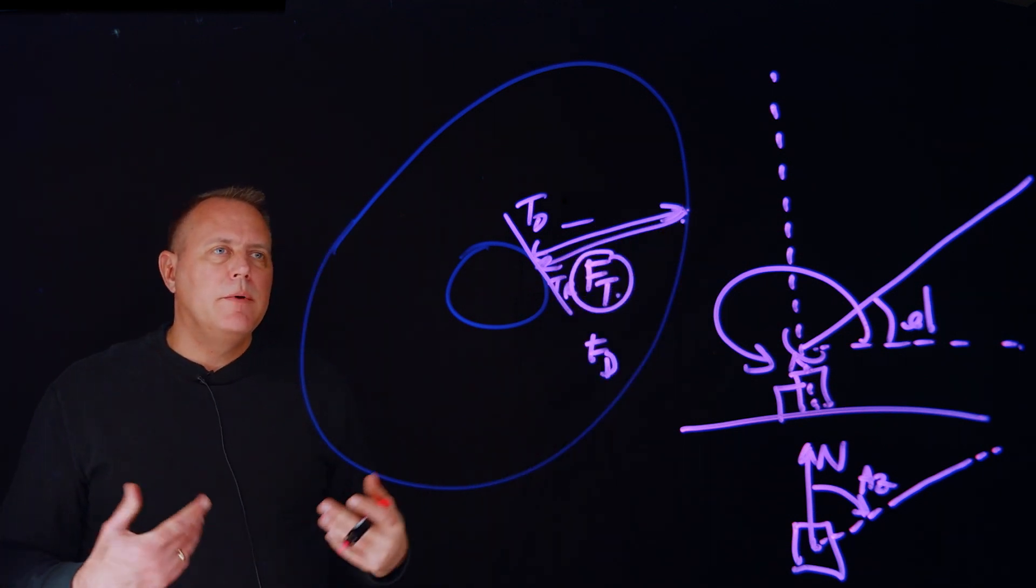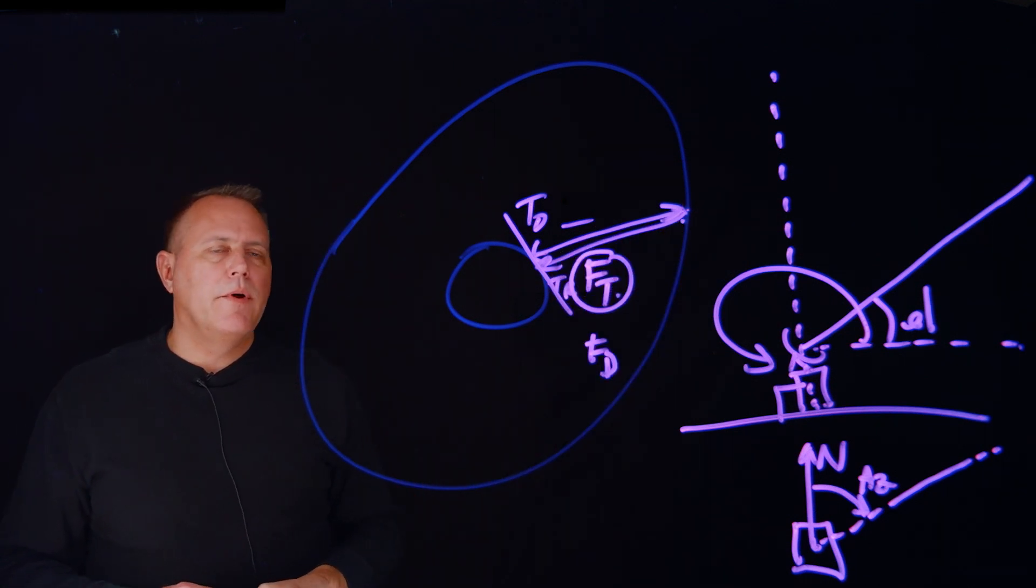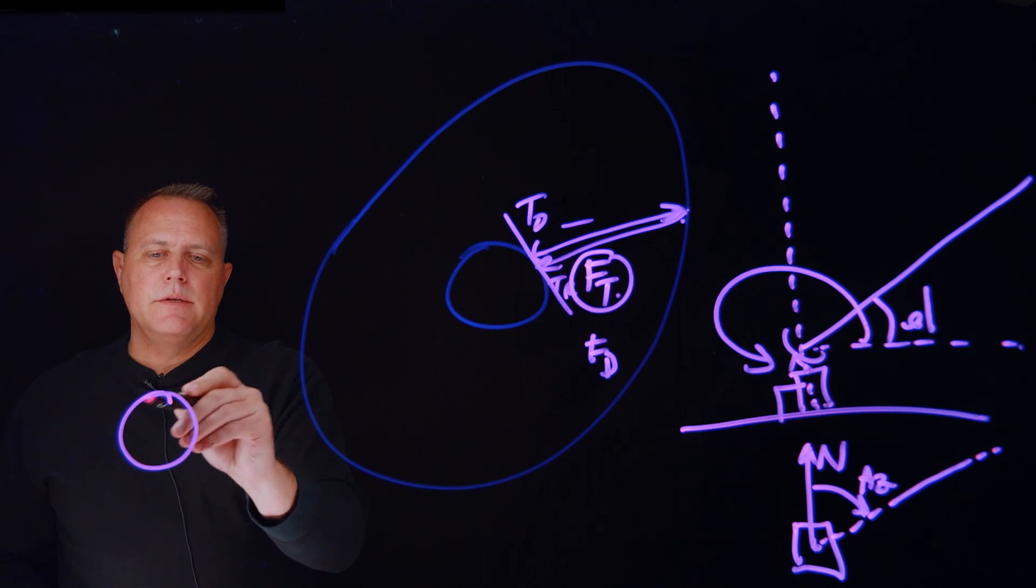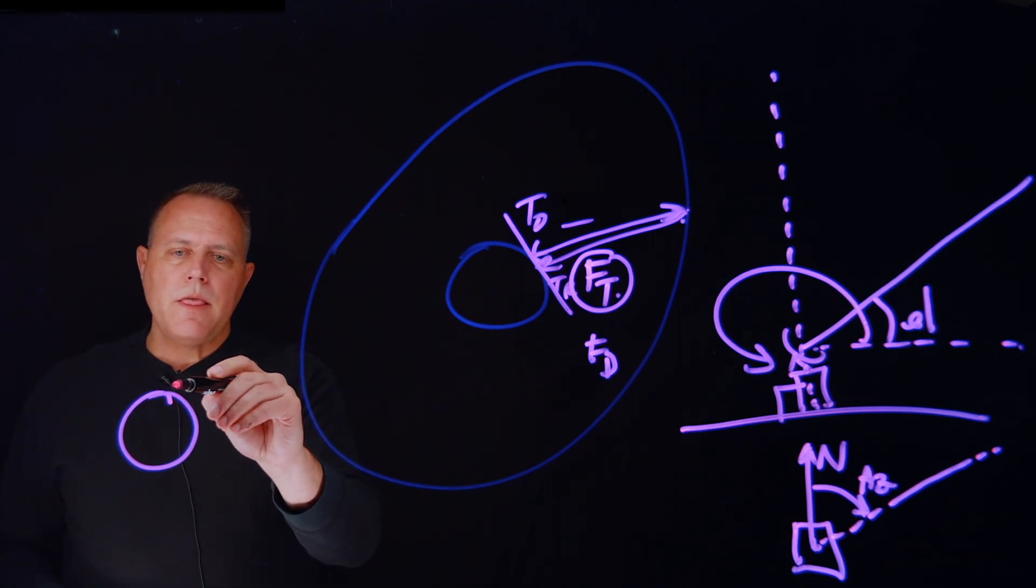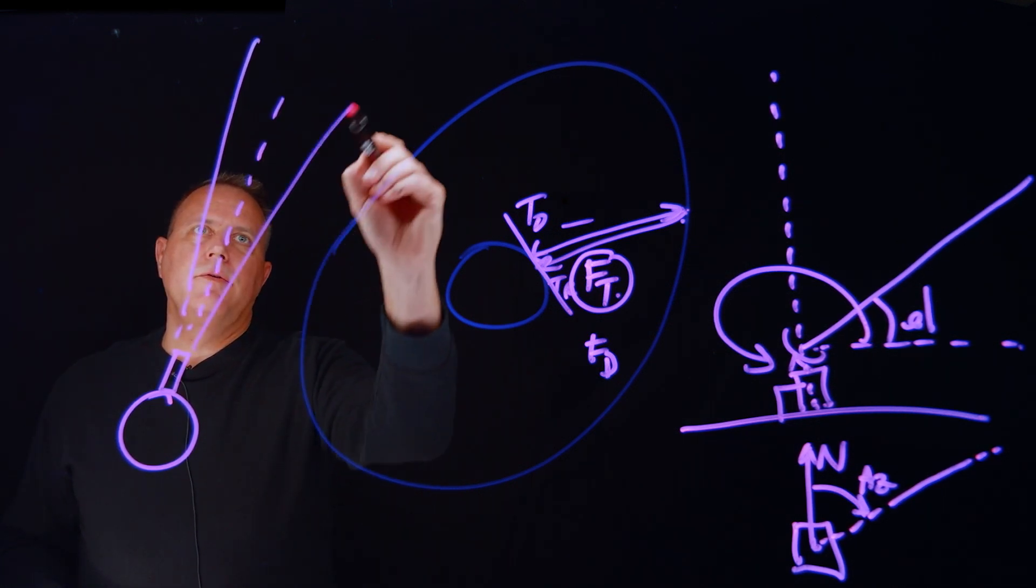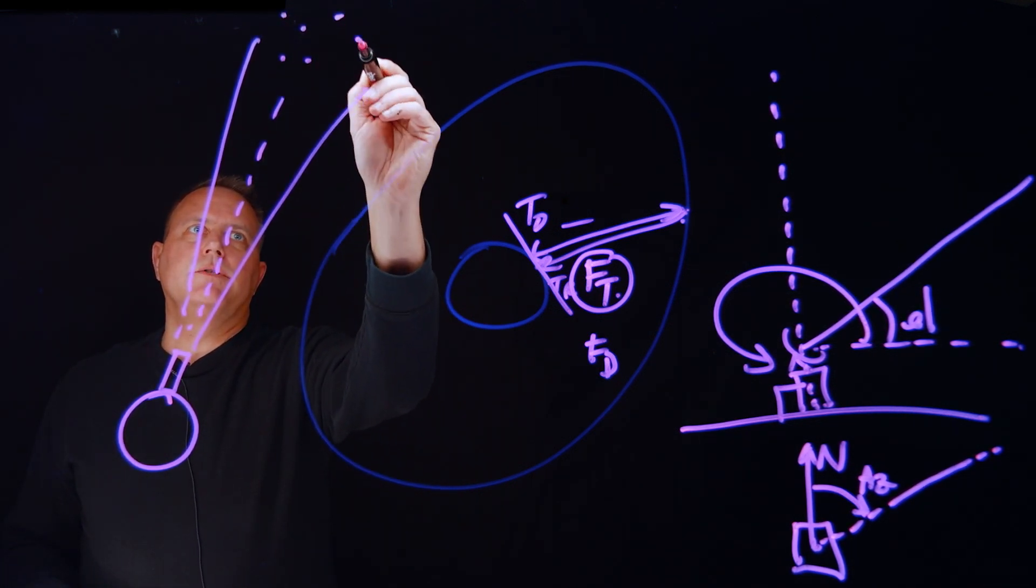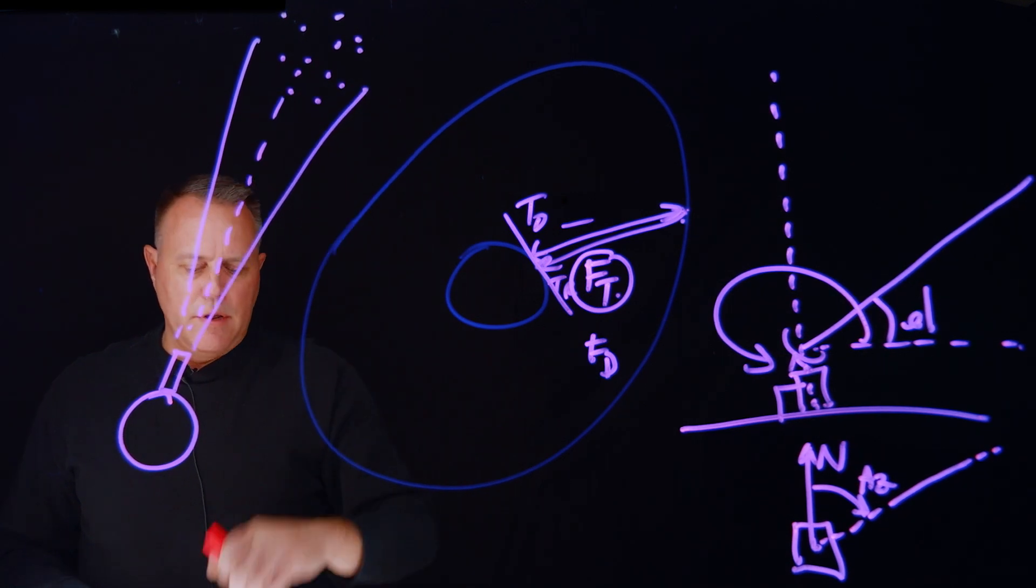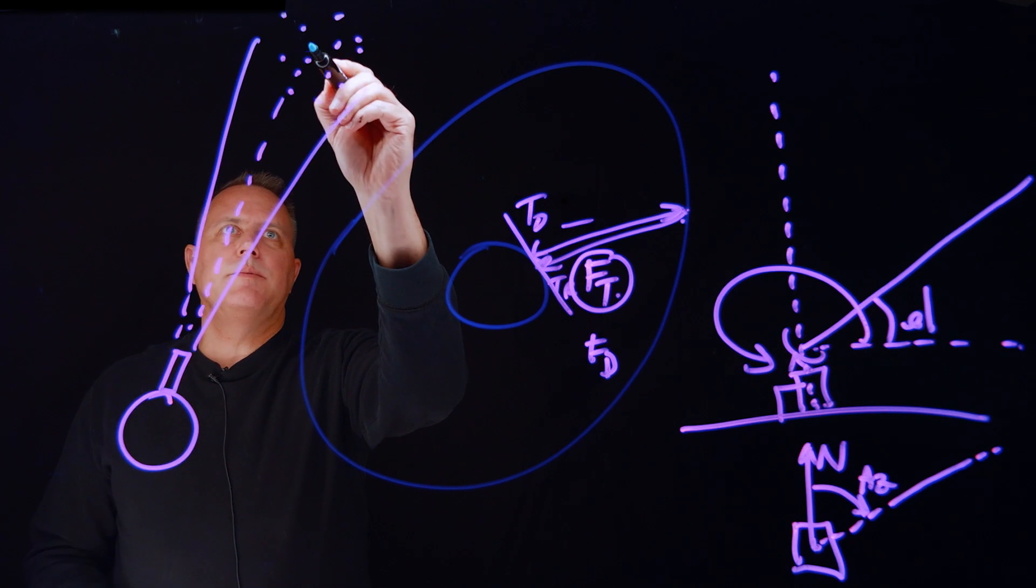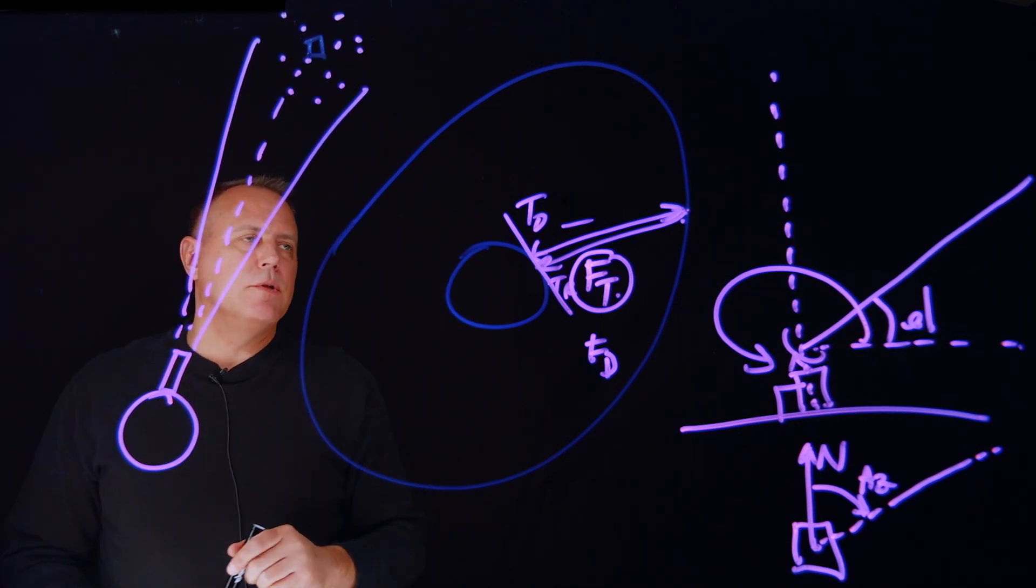The other common measurements that we might get are right ascension and declination, which is typically done when I have my earth here, and I'm going to use a telescope, and I'm going to look up, and my telescope's got a field of view. And in that field of view are a bunch of stars, and in that field of view is my spacecraft, which happens to look like another dot.